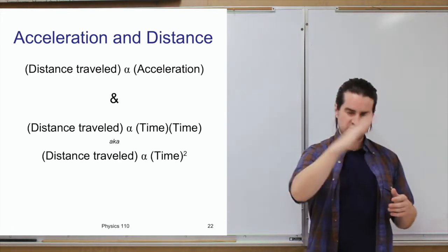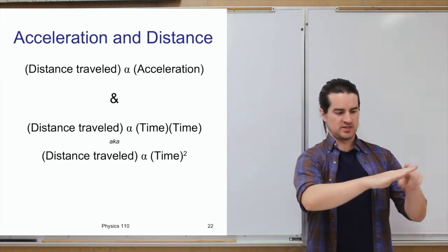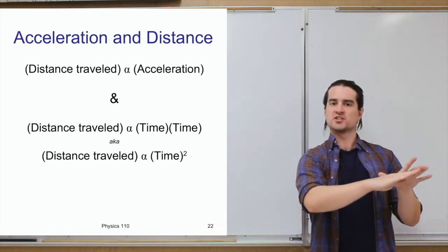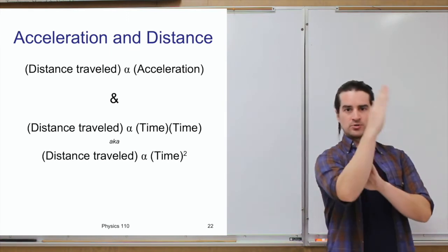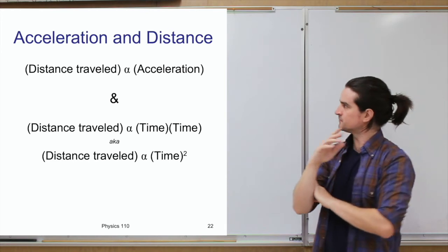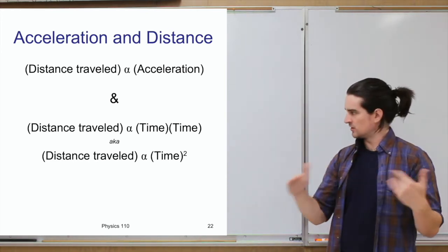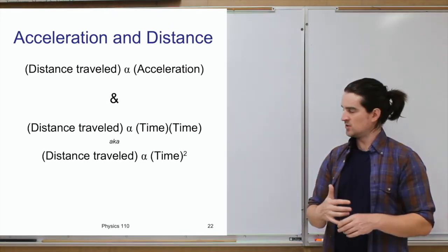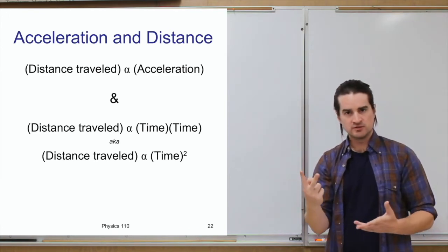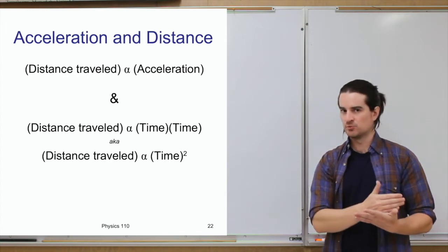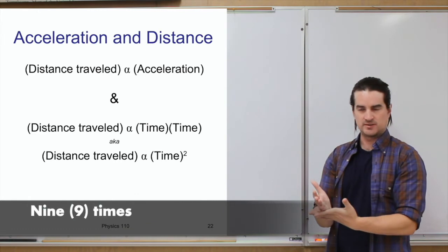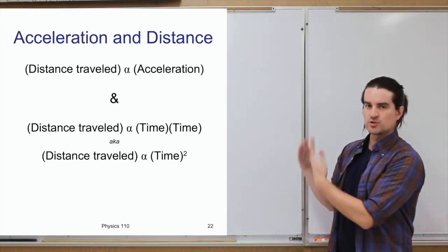Through his painstaking work, Galileo found that the distance objects traveled was proportional to the acceleration — less acceleration on a shallow plane, less distance per time interval; more acceleration on a steeper plane, greater distance. He also found the distance was proportional not just to time, but to two factors of time — meaning if time doubled, distance quadrupled; if time tripled, distance was nine times greater. That's what is meant by proportional to time squared.